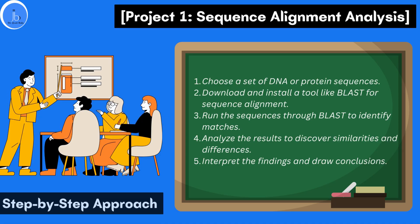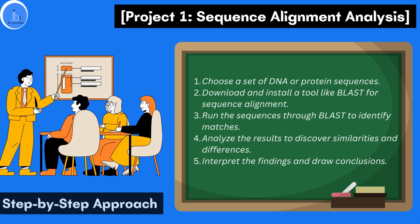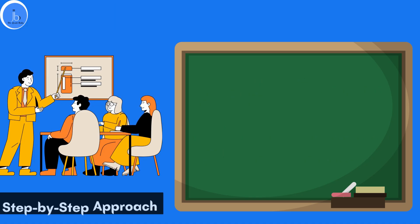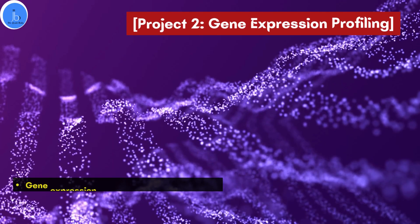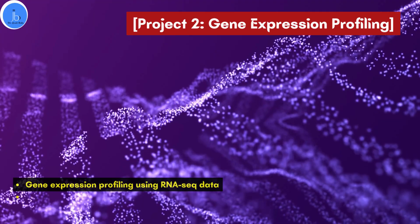Let me give you a step-by-step approach. You may either choose a set of DNA or protein sequences. Try to run SQL through NCBI BLAST to identify matches. Try to analyze the results to discover the similarities and differences. And based on those, interpret the functionalities and draw conclusions at the level of taxonomy.